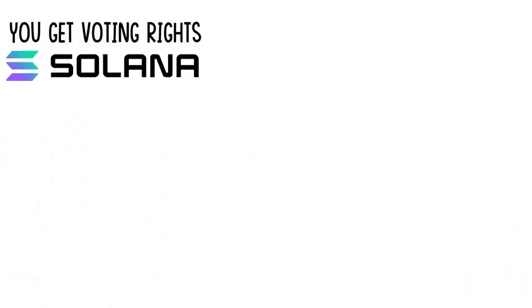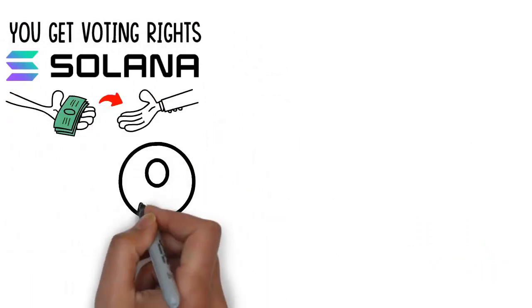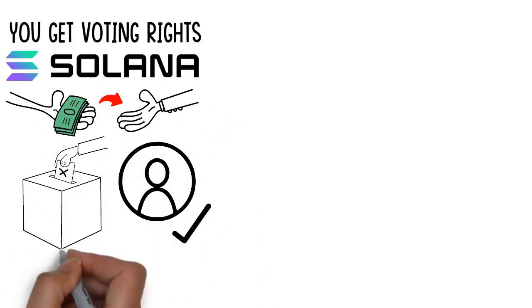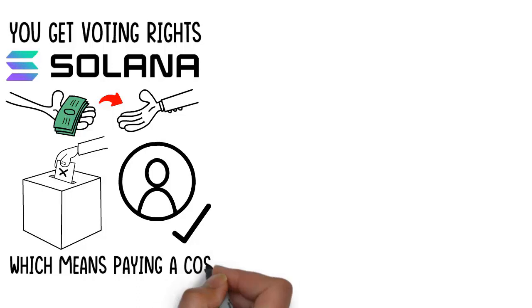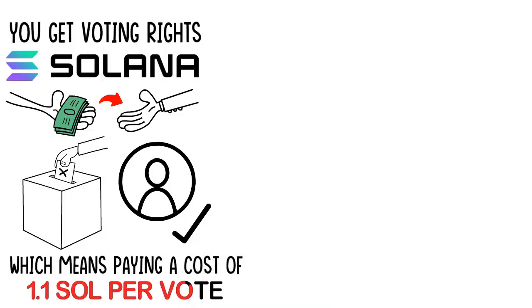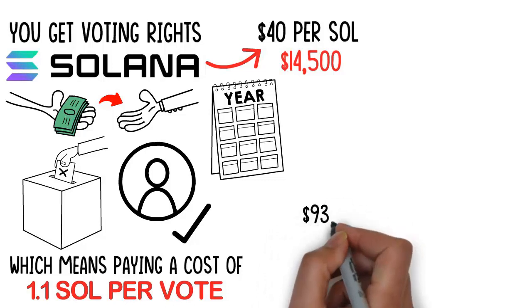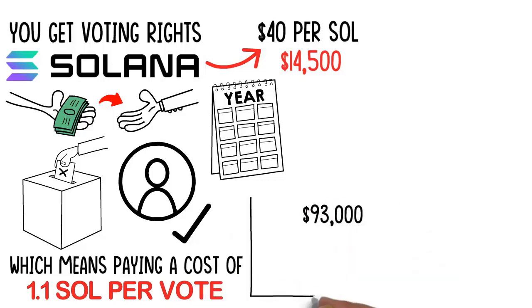And lastly, on the downsides, you get voting rights with your Solana that you own, but you have to pay to vote. And to hold a validator, you have to commit to voting every single day. So that means you have to pay a cost of 1.1 SOL per vote. So today, at about $40 per SOL, that's only $14,500 per year. But that's compared to $93,000 when SOL was at its peak price less than a year ago.